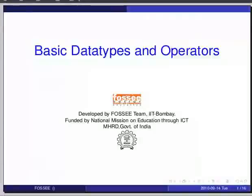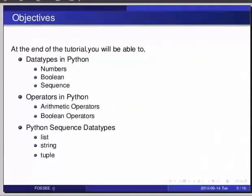Hello friends and welcome to the tutorial on basic data types and operators in Python. At the end of this tutorial you will be able to know the data types in Python — number, boolean, sequence — learn about the operators in Python: arithmetic operators and boolean operators, then know the Python sequence data types: list, string, and tuple.